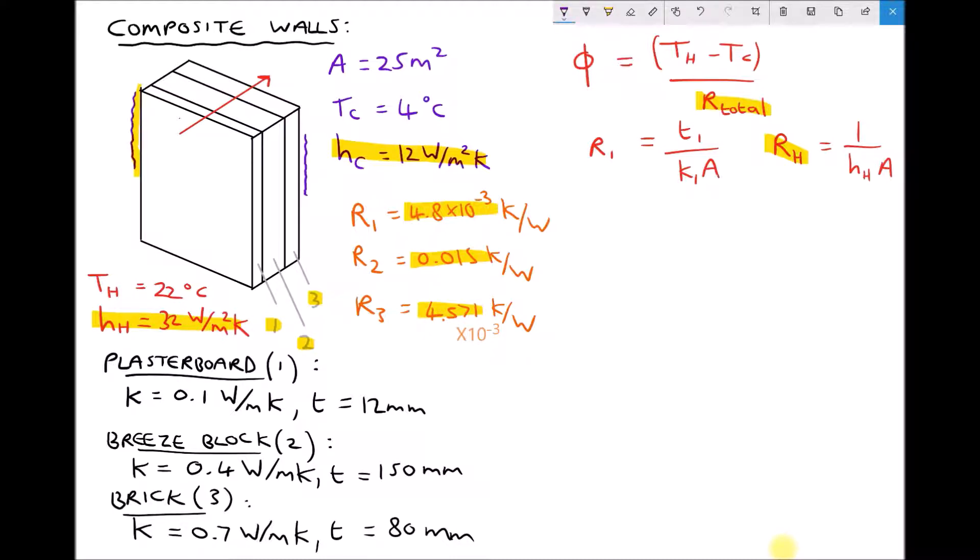So in order to calculate our total thermal resistance we first need the thermal resistance of the thin layer of air inside the building or on the hot side of the wall. It's calculated by doing 1 divided by the surface heat transfer coefficient of 32 times the area of 25. Giving us a value equal to 1.25 times 10 to the minus 3. Once again that's Kelvin per watt. Now we can repeat that for the cold side. On the cold side we have 1 over the surface heat transfer coefficient for the cold side of 12 times the area of 25. Giving us a value equal to 3.3 recurring times 10 to the minus 3.